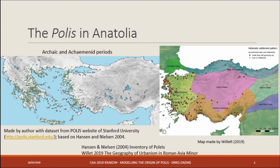The map on the west coast of Asia Minor shows polis communities identified by this project, focusing on the archaic and Achaemenid or classical periods. When we plot the settlements identified as polis specifically for Anatolia in Hellenistic times, we see that also in the interior there are a lot of polis communities developing in Anatolia.